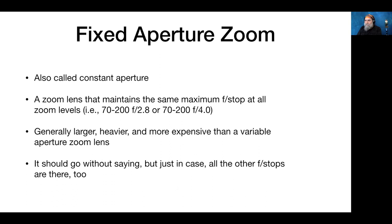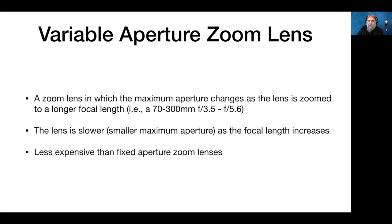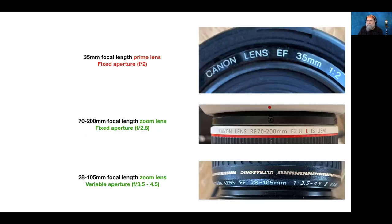Fixed aperture zoom lenses — constant aperture — include lenses like the 70–200 f2.8 or 70–200 f4. They're generally larger, heavier, and more expensive than variable aperture zoom lenses. Variable aperture zooms are those where the maximum aperture changes as the lens is zoomed, for example a 70–300 f3.5–5.6 — the lens is slower with a smaller maximum aperture as focal length increases. Lens markings may also include designations like Canon's L series, image stabilization (IS), and ultrasonic focusing motor (USM).